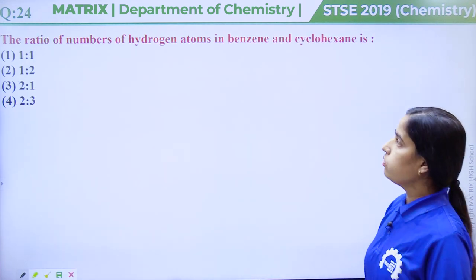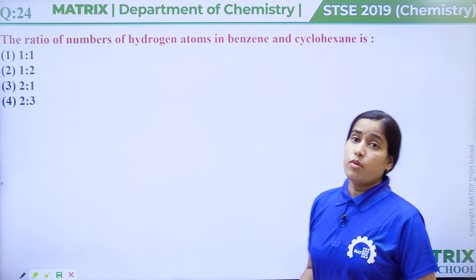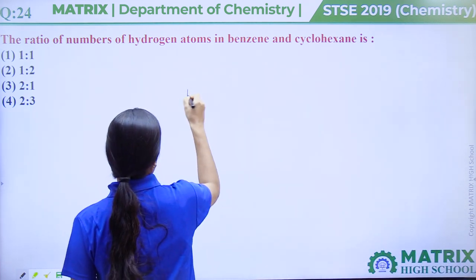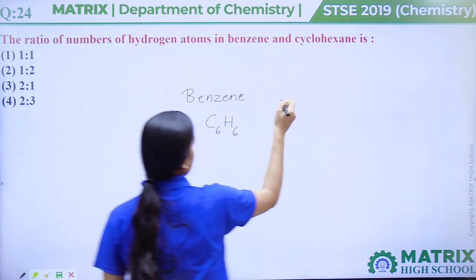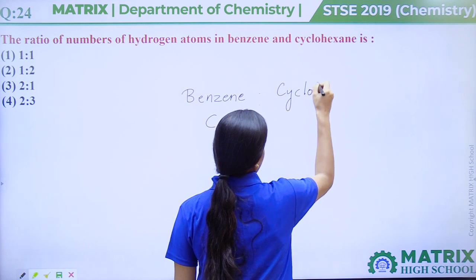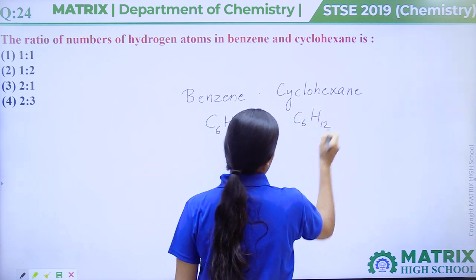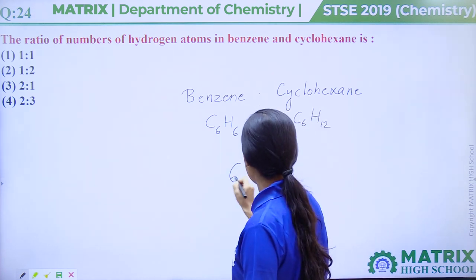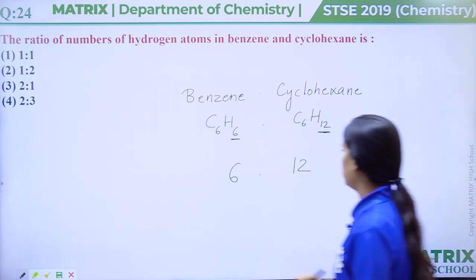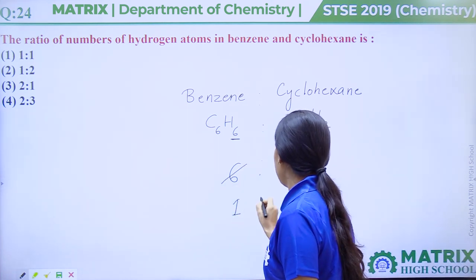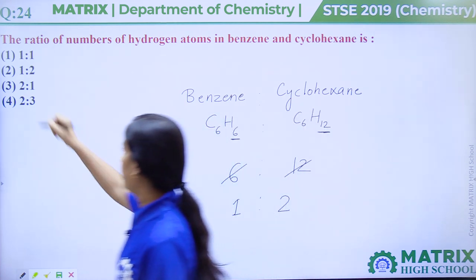Question number 24: The ratio of numbers of hydrogen atoms in benzene and cyclohexane is. The molecular formula of benzene is C6H6 and the molecular formula of cyclohexane is C6H12. In benzene, 6 hydrogen atoms are present, and in cyclohexane, 12 hydrogen atoms are present. So the ratio of hydrogen atoms is 1:2. Correct answer is option number 2.